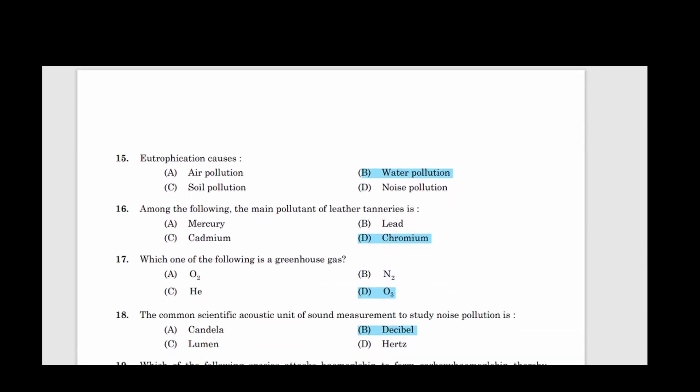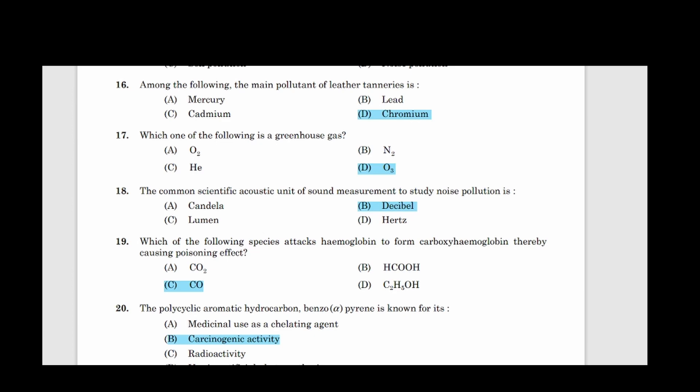Sixteenth question: Among the following, the main pollutant of leather tanneries is. Option D, Chromium. Seventeenth question: Which one of the following is a greenhouse gas? Correct answer option D, O3. Eighteenth question: The common scientific acoustic unit of sound measurement to study noise pollution is. Option B, Decibel.